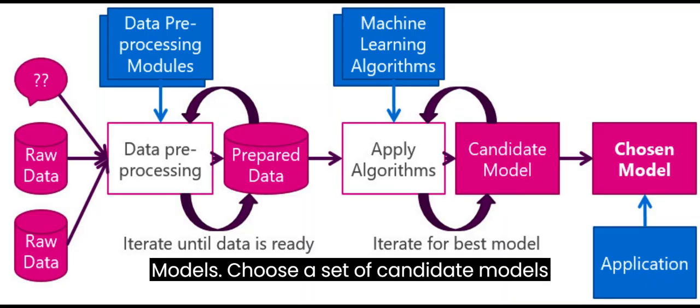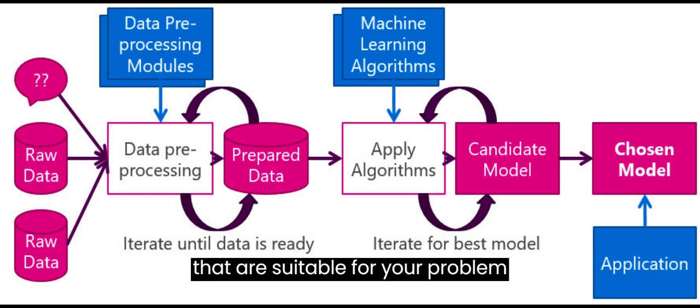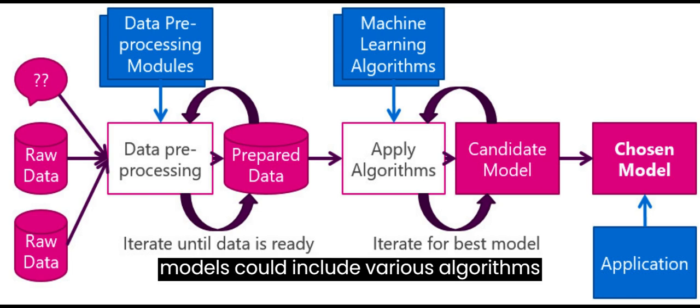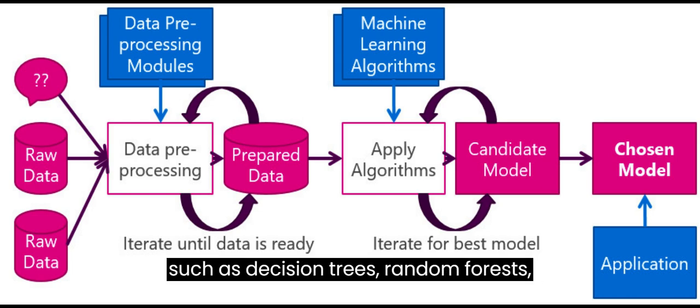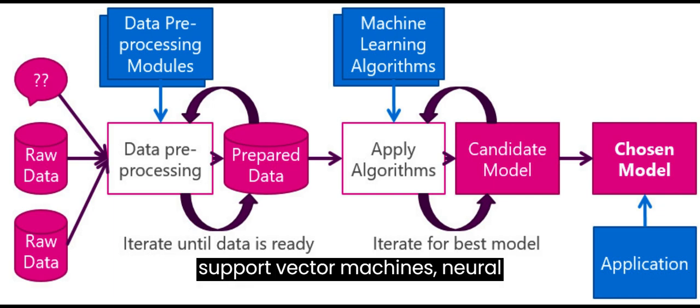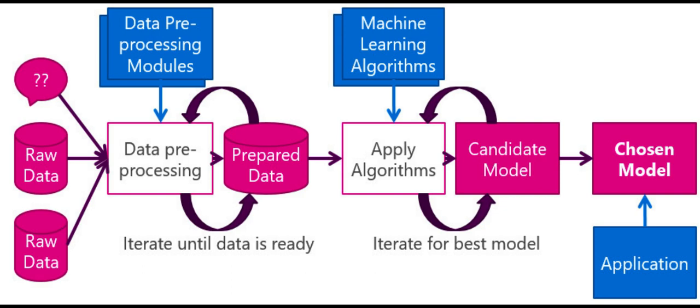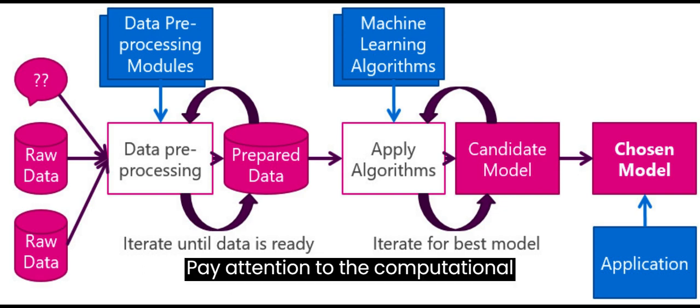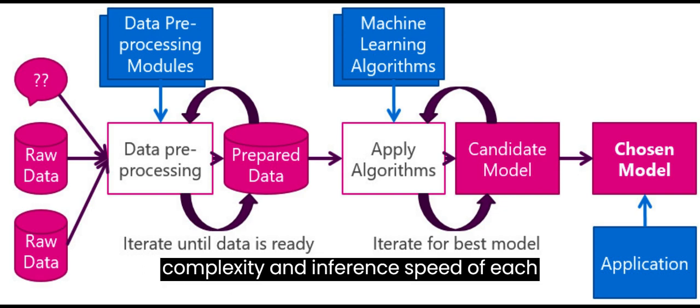Select candidate models. Choose a set of candidate models that are suitable for your problem, considering the specific requirements of real-time technology. These models could include various algorithms such as decision trees, random forests, support vector machines, neural networks, or ensemble methods. Pay attention to the computational complexity and inference speed of each model.